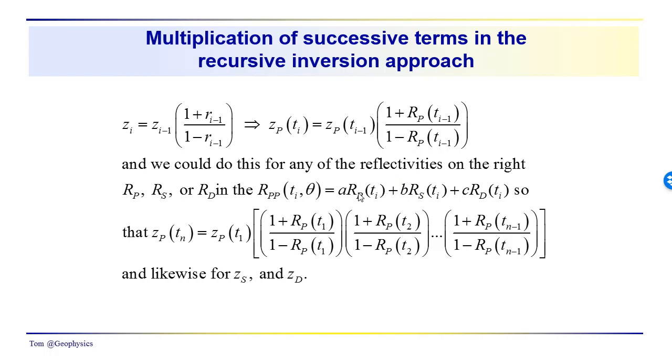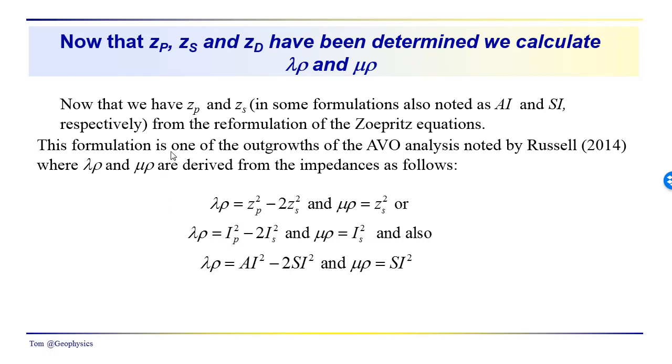We have r sub p's - we've determined what the r sub p's are for all times, the r sub s's and the r sub d's. So we should be able to determine the shear wave impedance, the density impedance, as well as the compression wave impedance as a function of our observation time throughout the length of our gather.